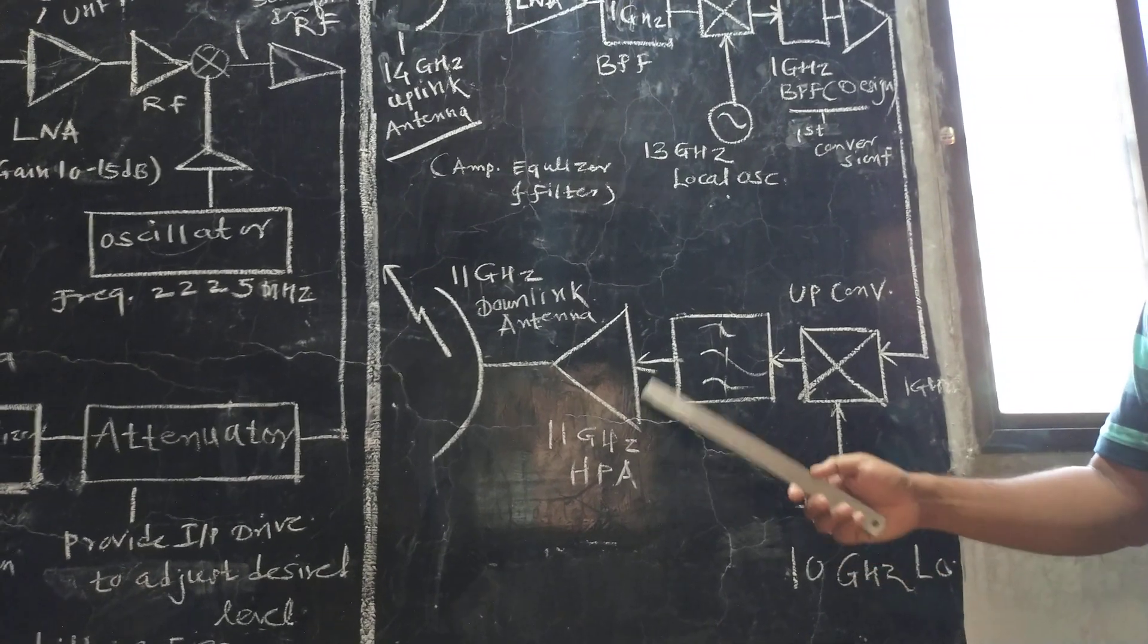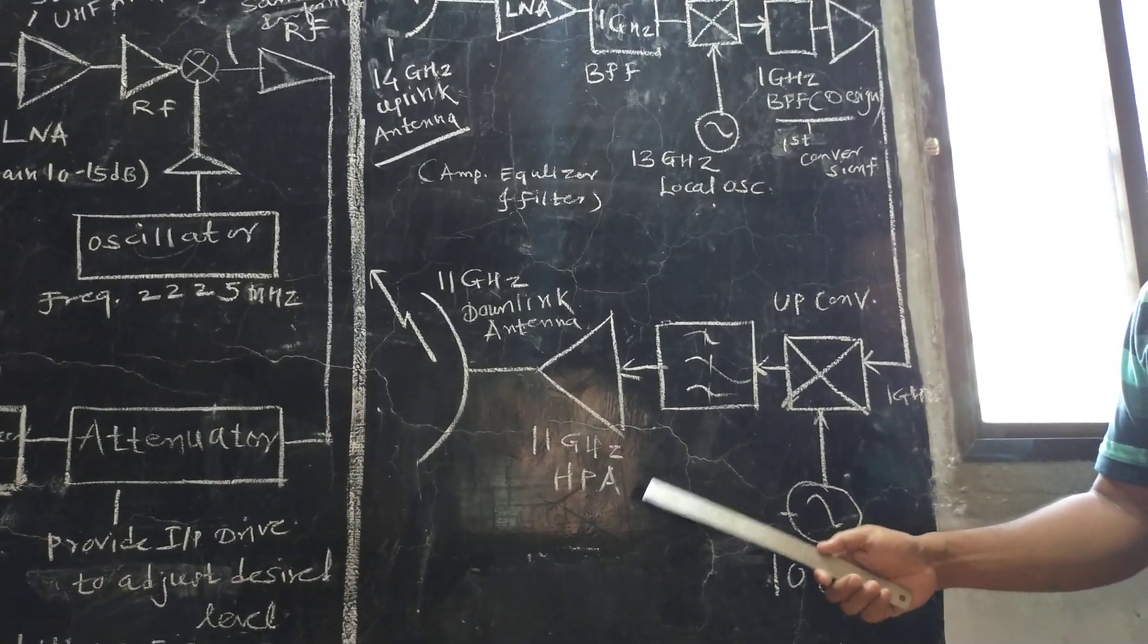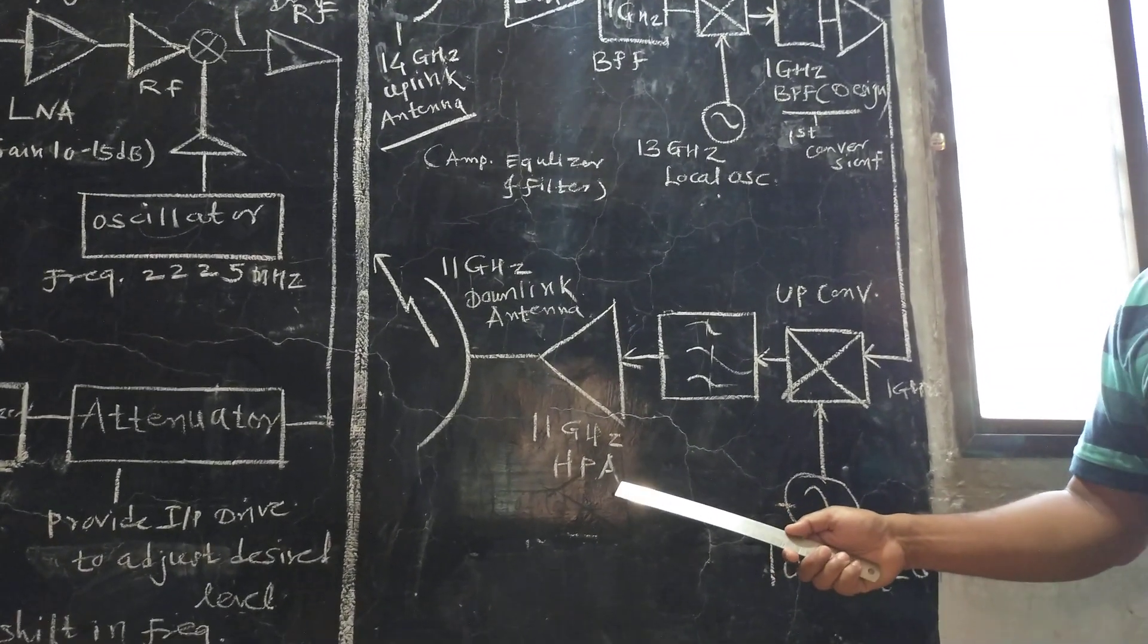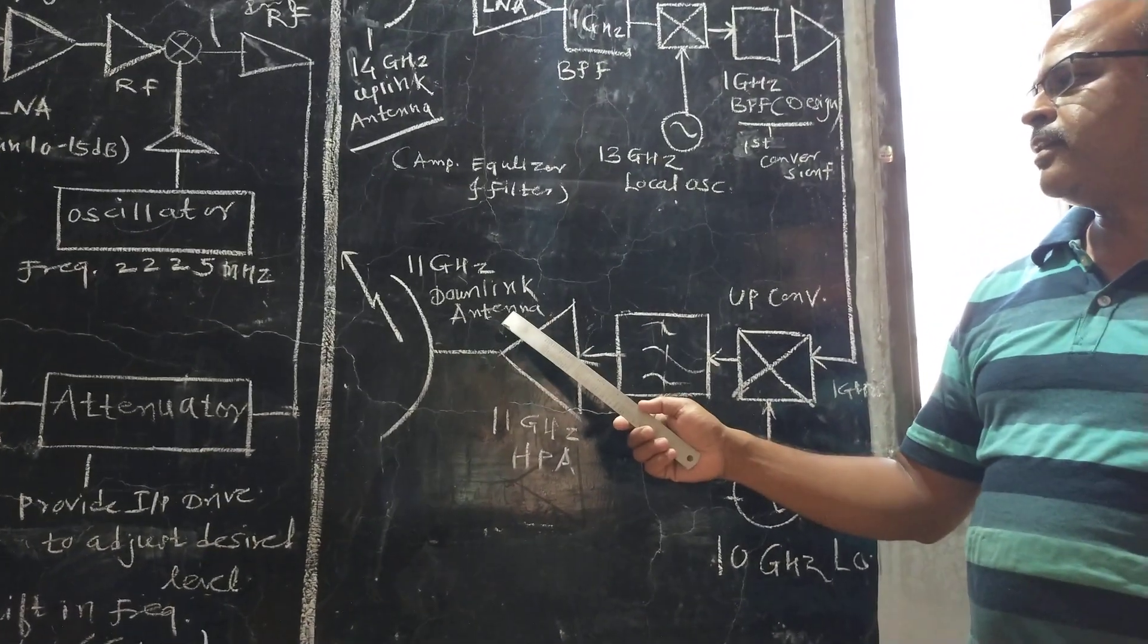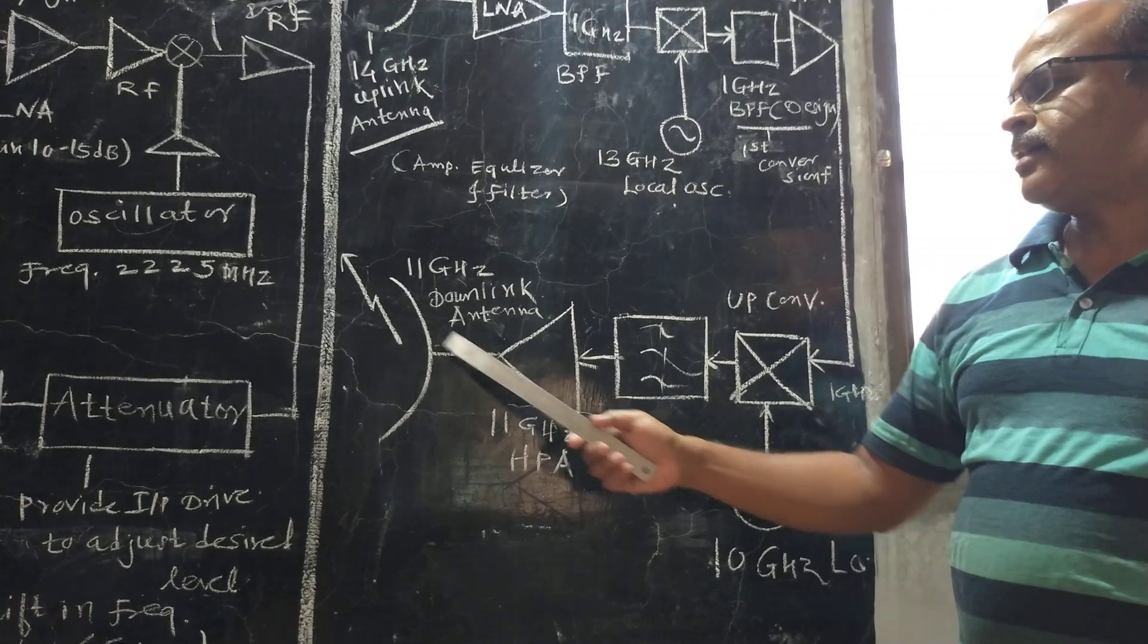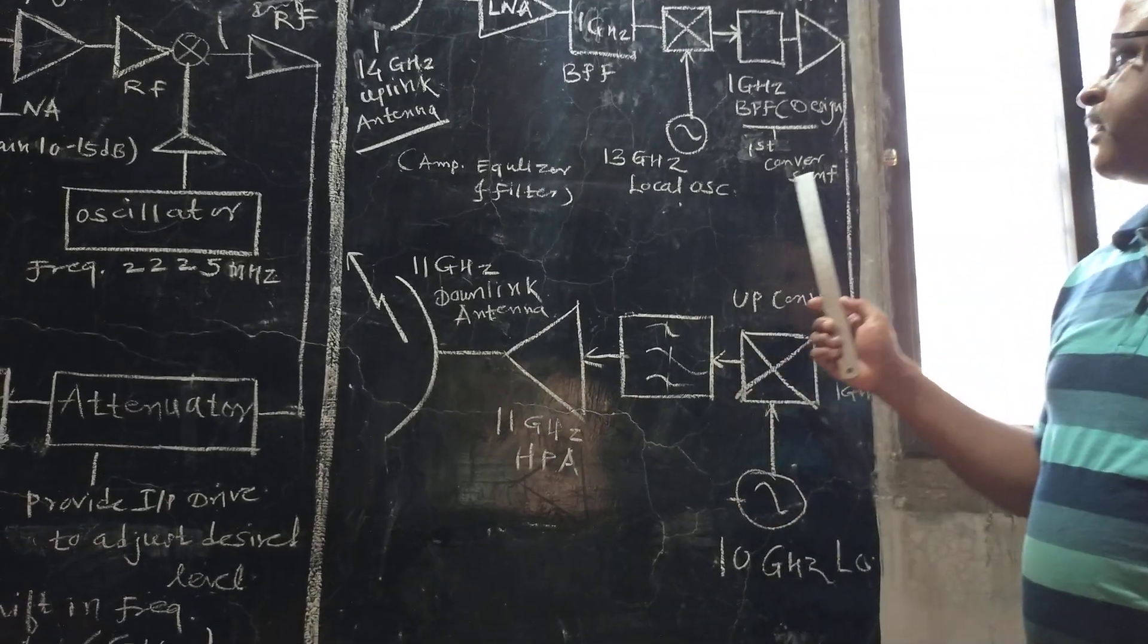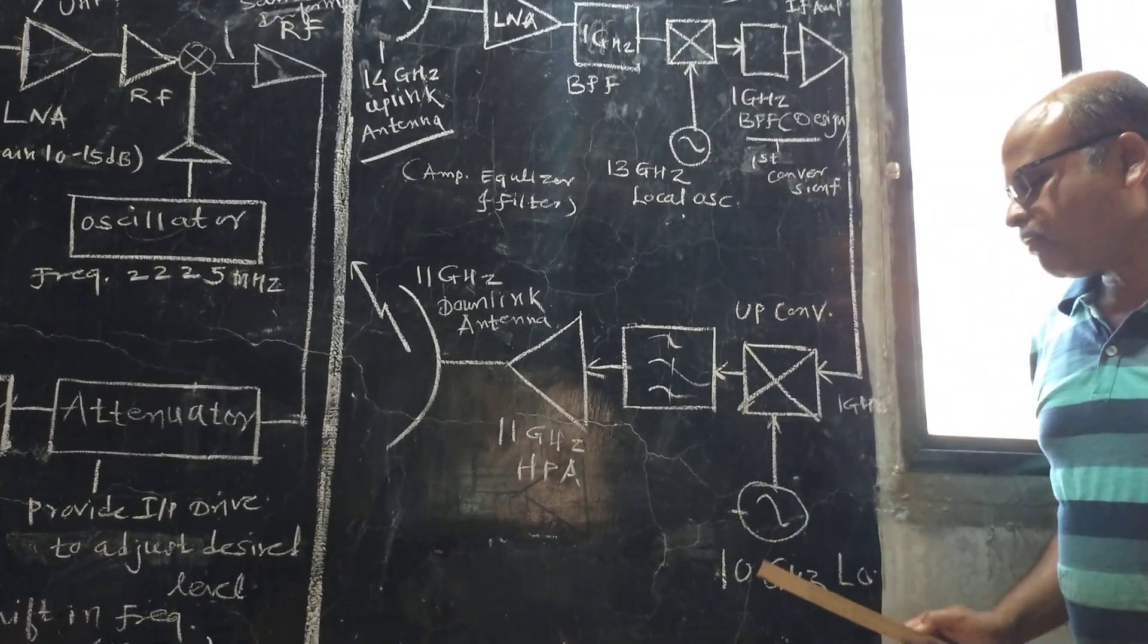To boost the signal power level, a high power amplifier is used. As shown in this figure, the 11 GHz downlink frequency is transmitted. There is a double conversion of frequency.